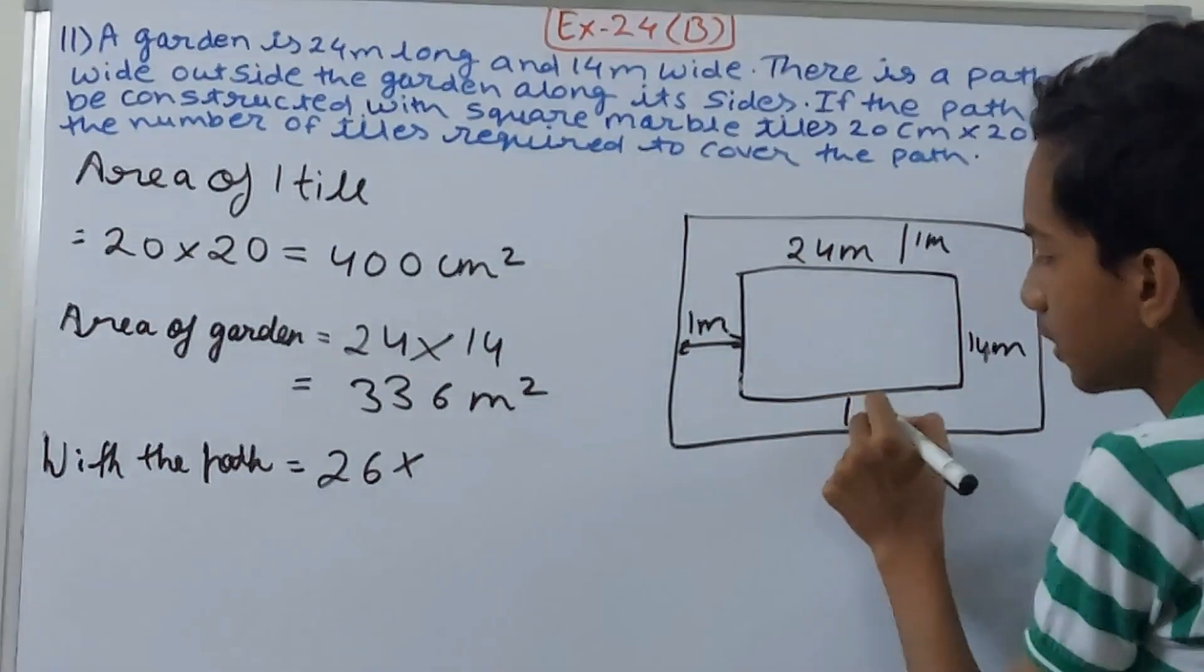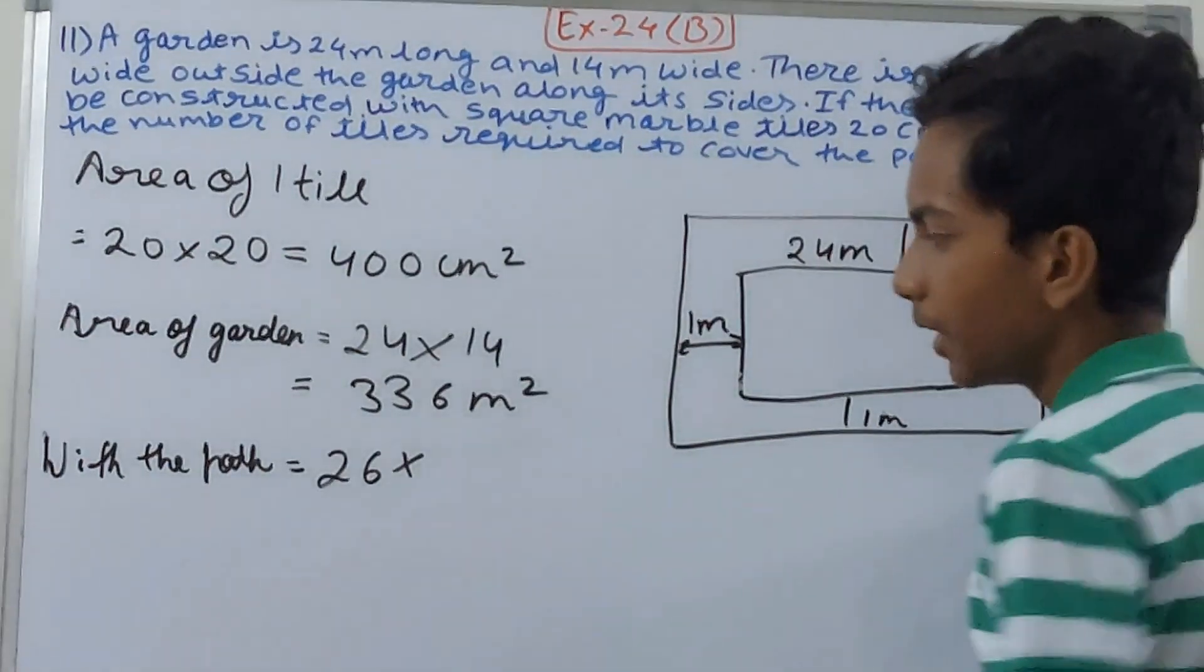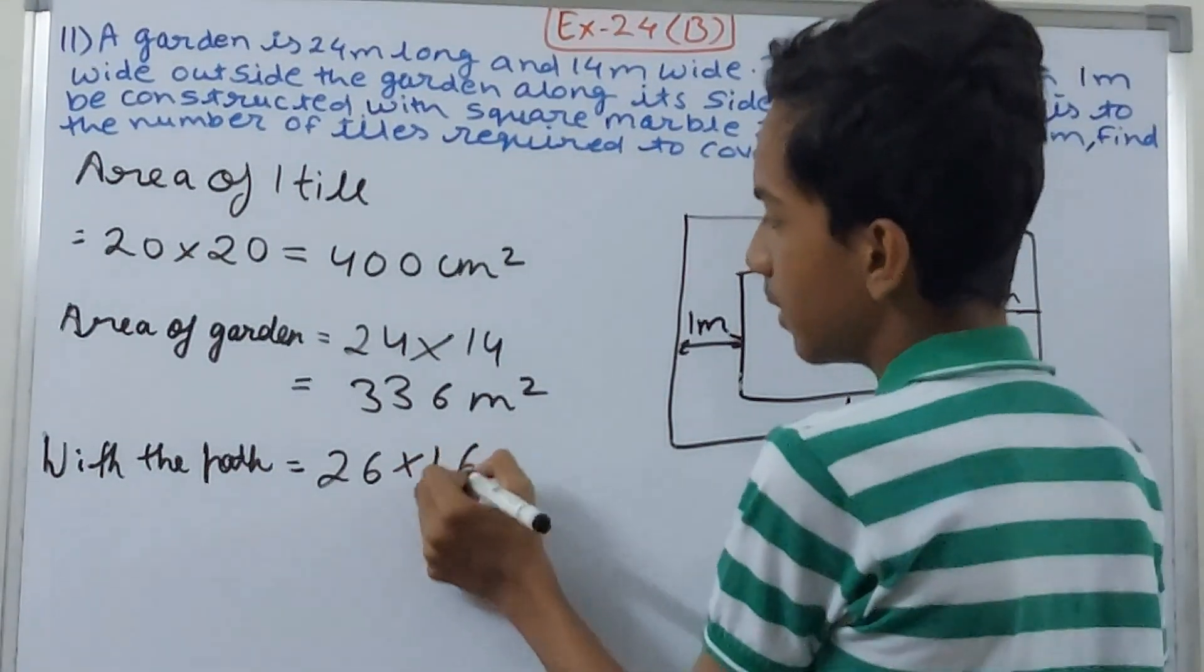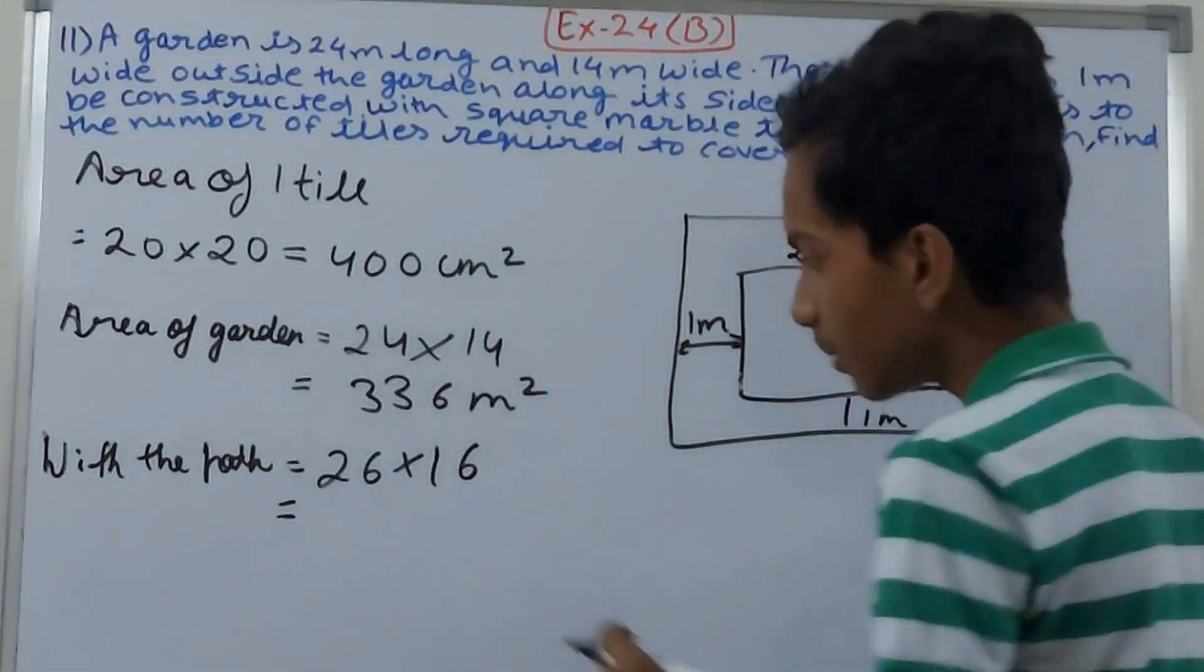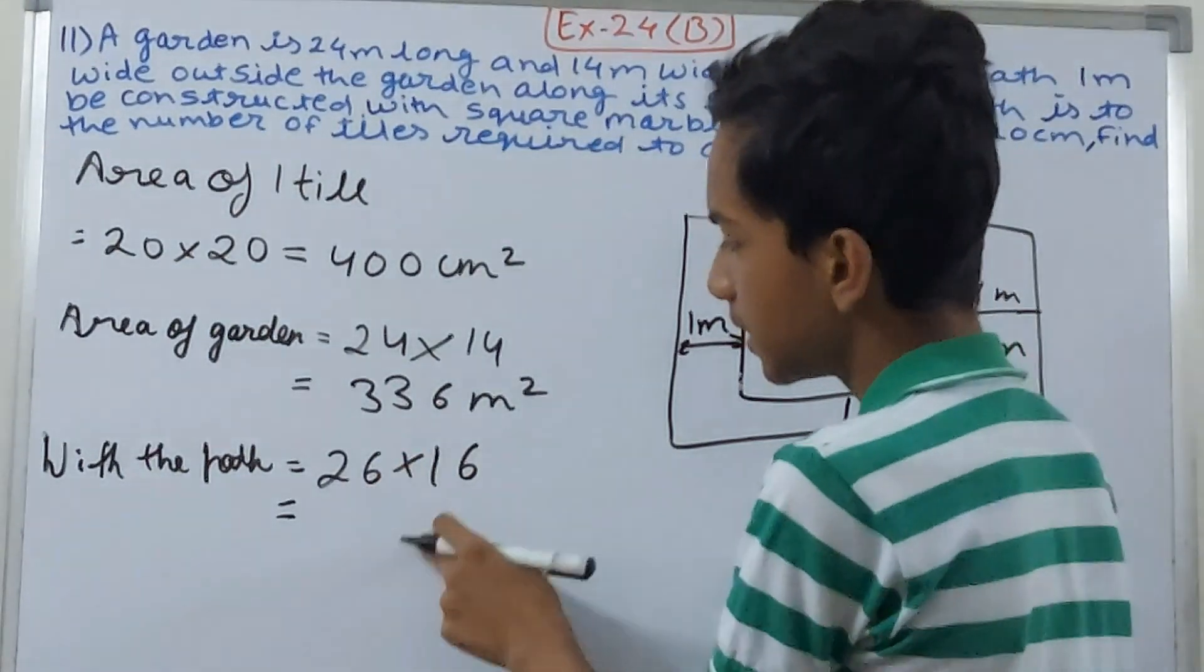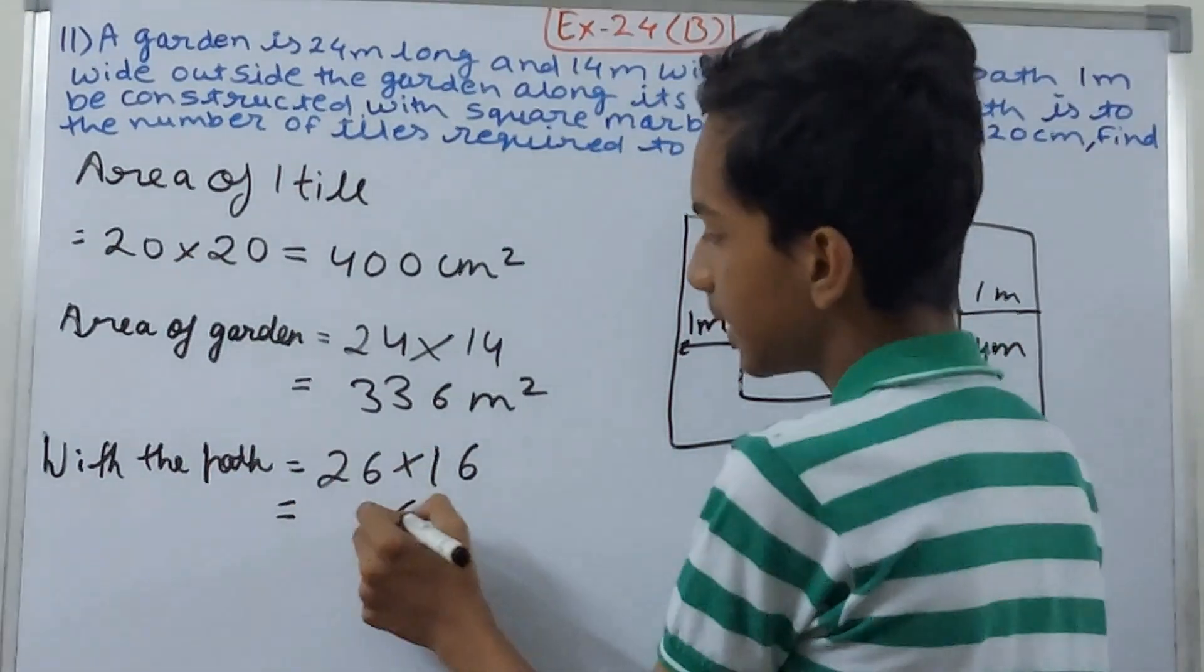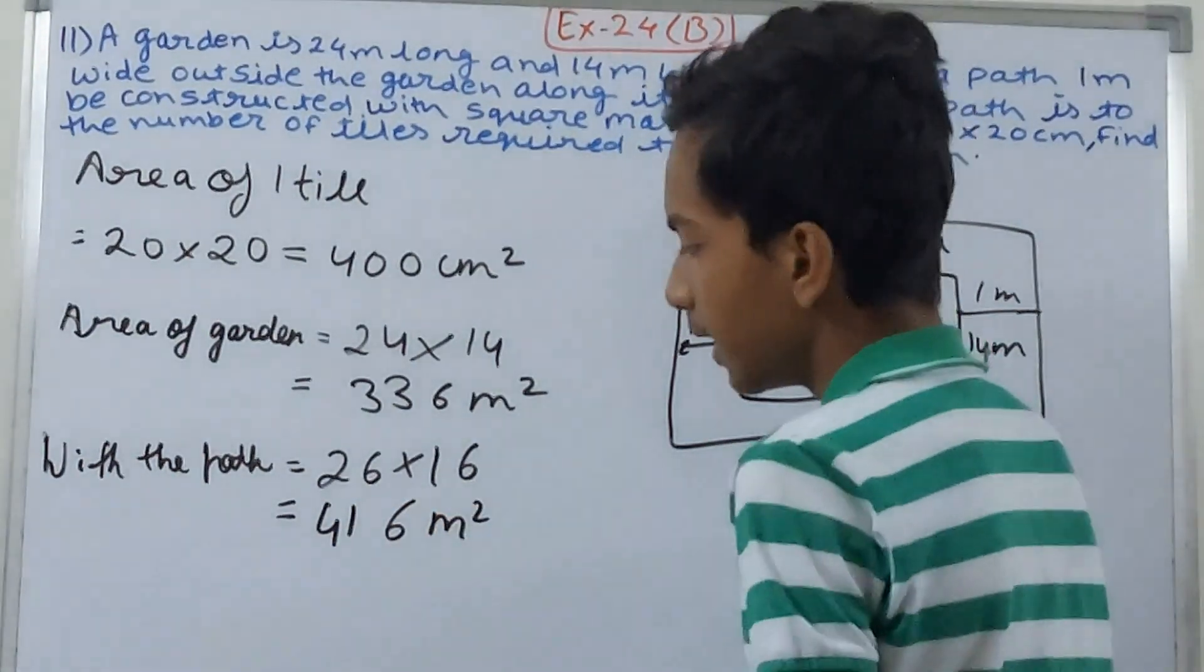...this will be 1 meter and here also this length will be 1 meter, here also 1 meter. So 26 into 16, that is going to give you 416 square meters.